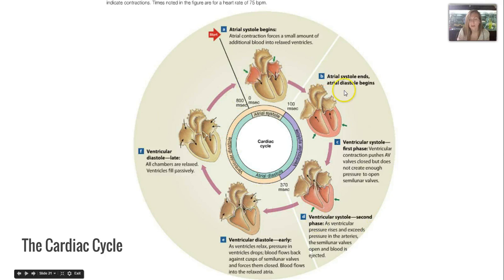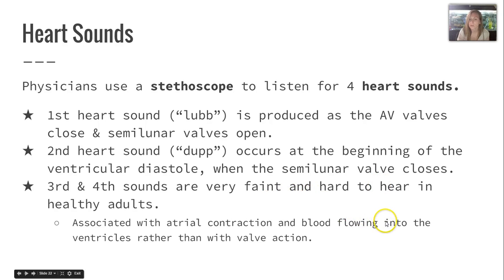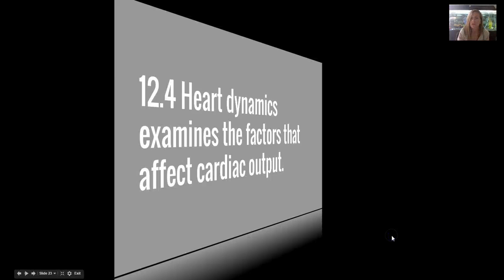Here is your cardiac cycle — write down the order in your notes and we'll look at it more closely in the interactive notebook. Heart sounds can be detected with a stethoscope. The first sound is 'lub,' produced as the AV valves close and semilunar valves open. The second sound is 'dup,' occurring at the beginning of ventricular diastole when the semilunar valve closes. The third and fourth sounds are hard to hear in healthy adults and are associated with atrial contraction and blood flowing into the ventricles.